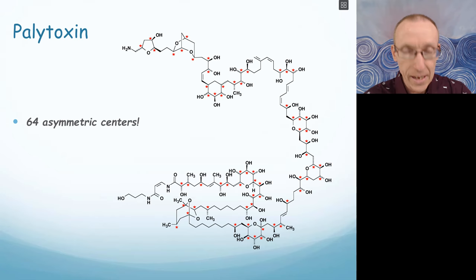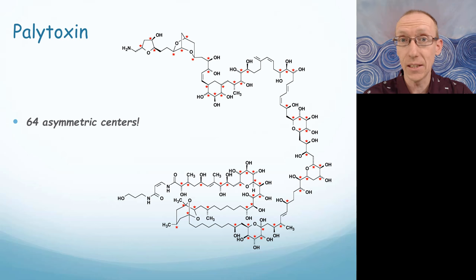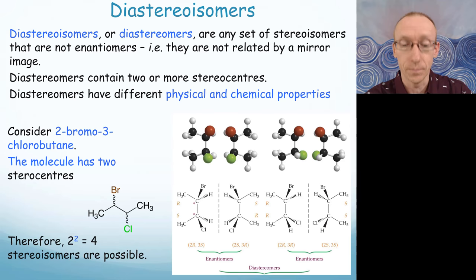Going back to Palytoxin, it has 64 stereogenic centers, so 2 to the power of 64 tells you just how many different stereoisomers there could be of Palytoxin.